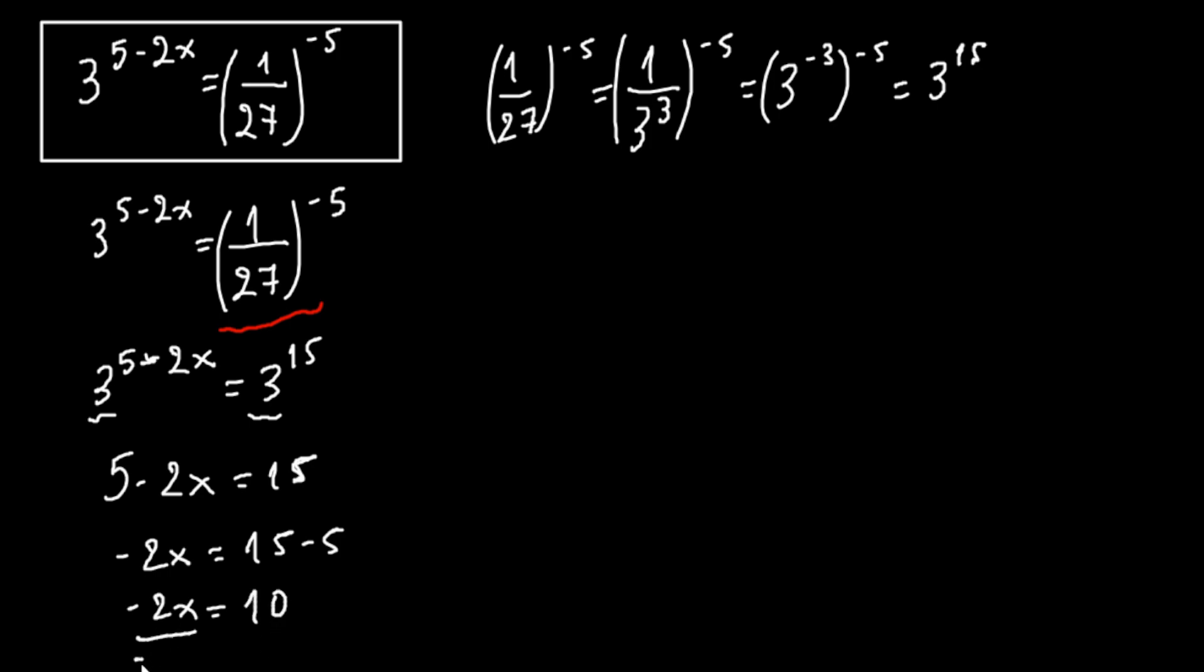We divide both sides by minus 2. So finally we have that x equals minus 5, which is our final solution.